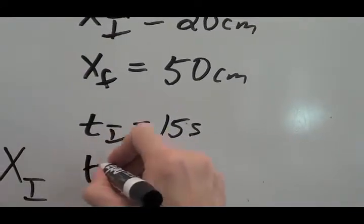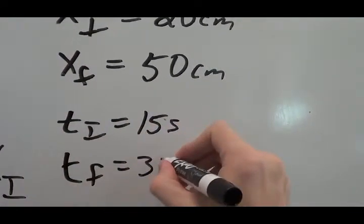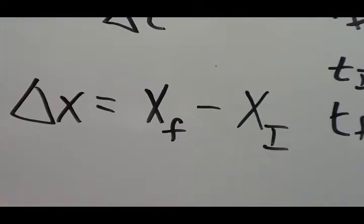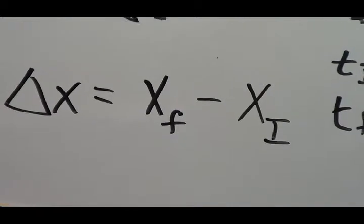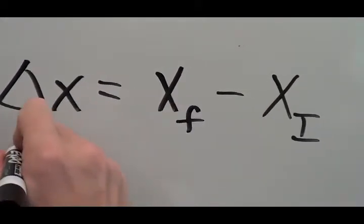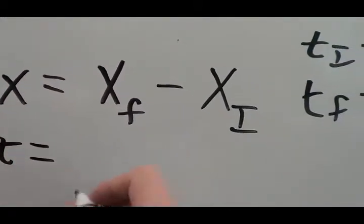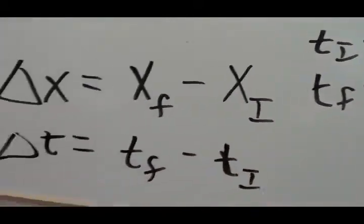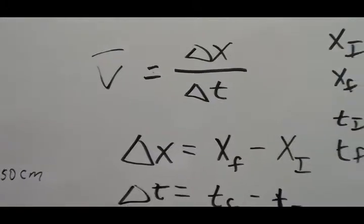Now, just like we find the change in position, or the displacement, by the final minus initial, we can find the amount of time it took him to get from one place to the other by the final time minus the initial time. Okay, now these are the three equations here we're going to use. This is the data we're going to use to solve it.